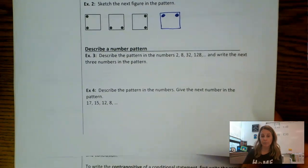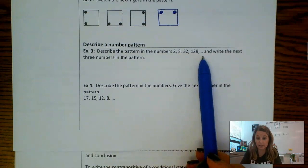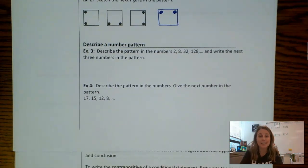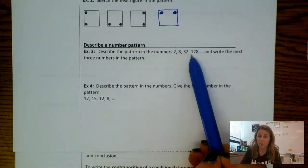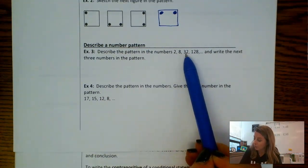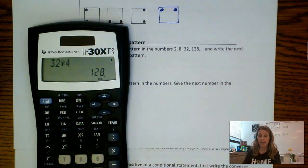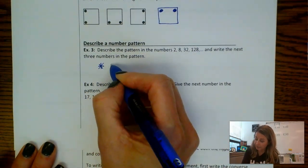Let's keep going with patterns and describe number patterns. Number three: describe the number pattern in the numbers 2, 8, 32, 128, and write the next three numbers in the pattern. When we describe number patterns, we try to say things like it's adding five every time or it's dividing by three. I see that these numbers are growing really fast. Maybe between 2 and 8, it's multiplying by 4. So let's check: 32 times 4 gives me 128. So my pattern is multiplying by 4.